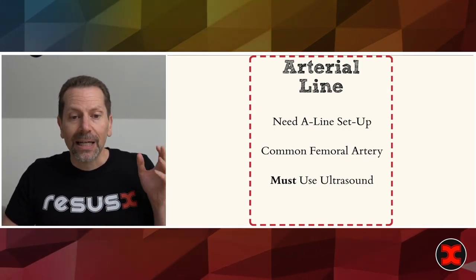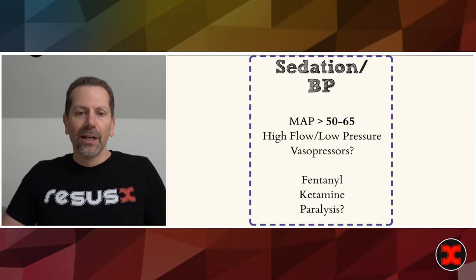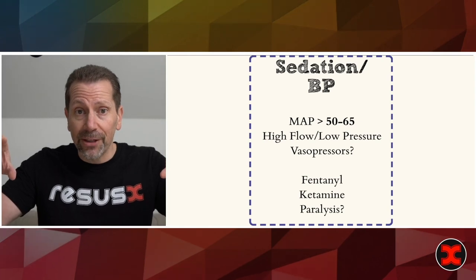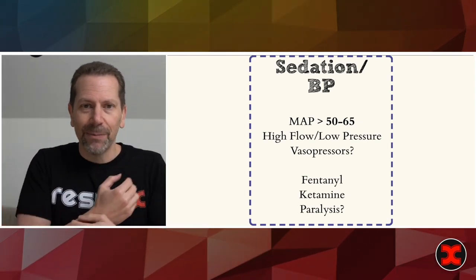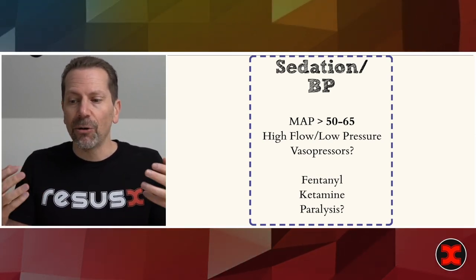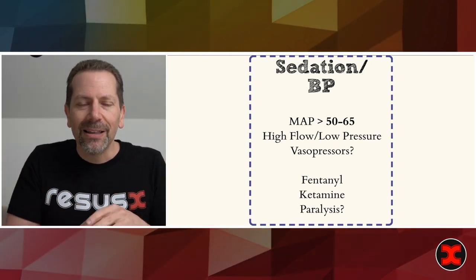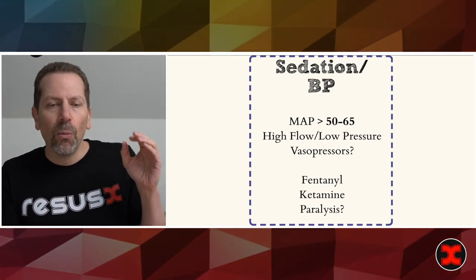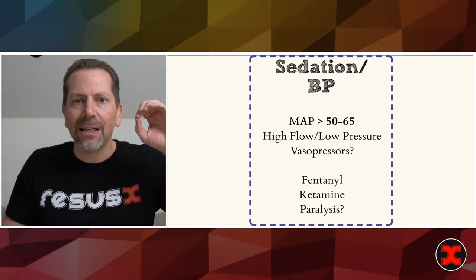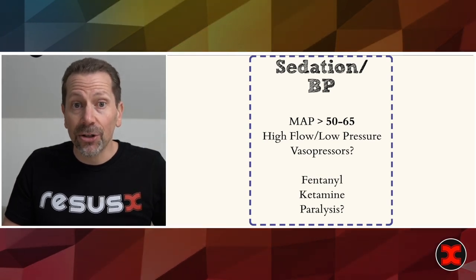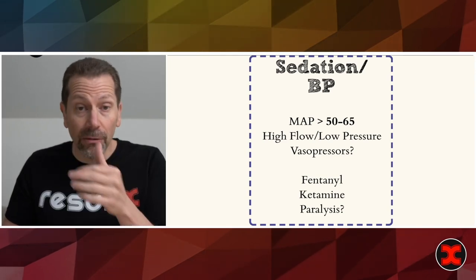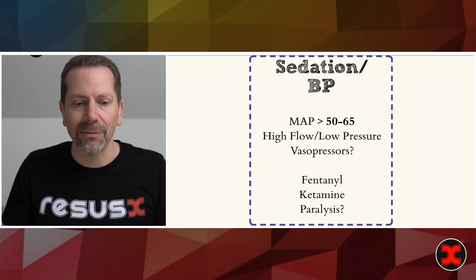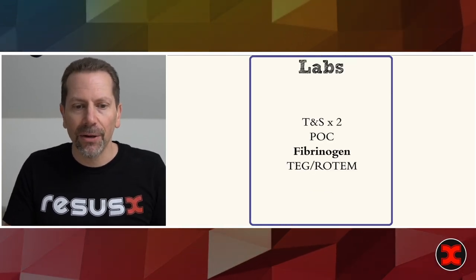For the art line, ask for a setup at the common femoral; in any sick trauma patient you must use ultrasound. For sedation, balance sedation and BP — you want them to lose some peripheral vasoconstriction to allow organ perfusion without bottoming out blood pressure. Shoot for a MAP between 50 and 65, aiming for a high-flow, low-pressure state: good cardiac output but low pressure so you don't knock off the clot. Give blood products until the pressure gets above 65, then trickle in fentanyl. At higher doses — around 500 micrograms — fentanyl gives wonderful sedative effects. If they're moving around too much and sedated, consider paralysis.